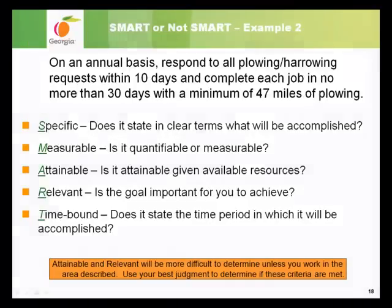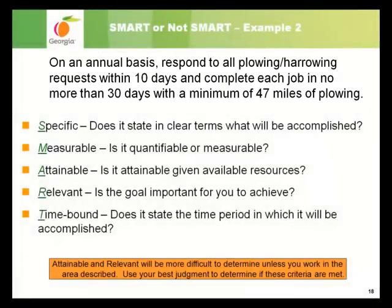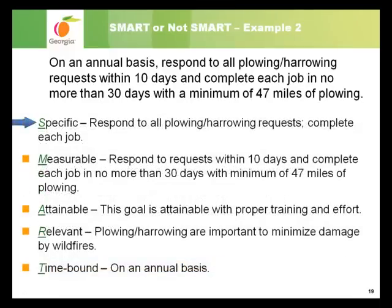Here is a sample goal for a ranger with the Georgia Forestry Commission: 'On an annual basis, respond to all plowing and harrowing requests within 10 days and complete each job in no more than 30 days with a minimum of 47 miles of plowing.' Pause the presentation and think through each criterion. Example 2 is a SMART goal. It is specific — respond to all plowing and harrowing requests, complete each job. It is measurable — respond within 10 days, complete in no more than 30 days with a minimum of 47 miles of plowing. It is attainable with proper training and effort. It is relevant — plowing and harrowing are important in minimizing damage by wildfires. And it is time-bound — on an annual basis.